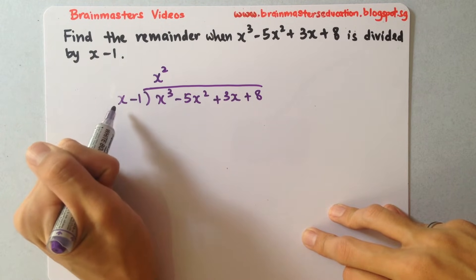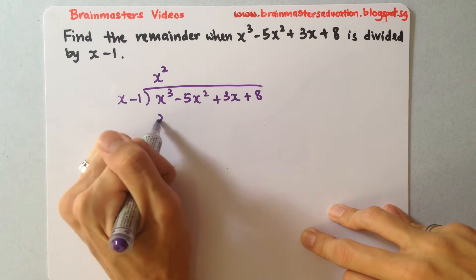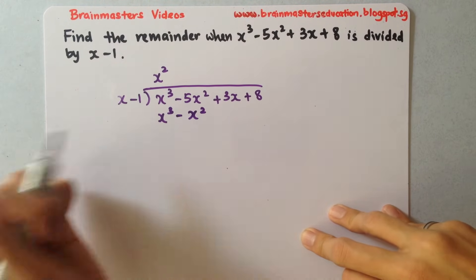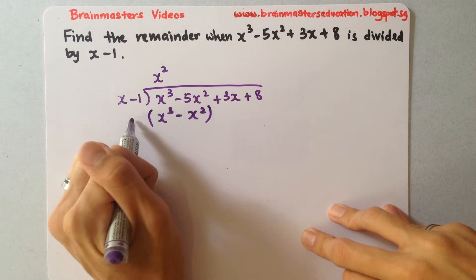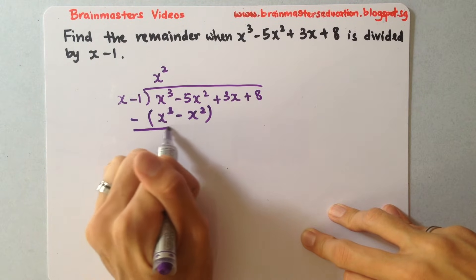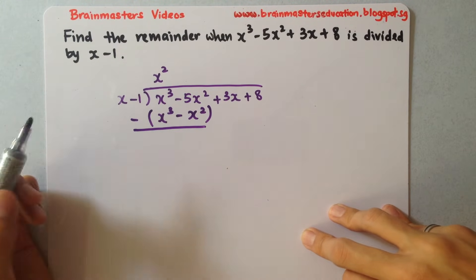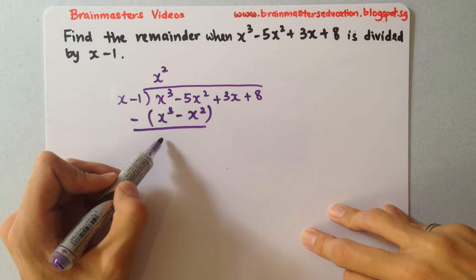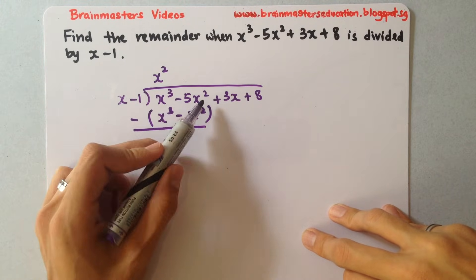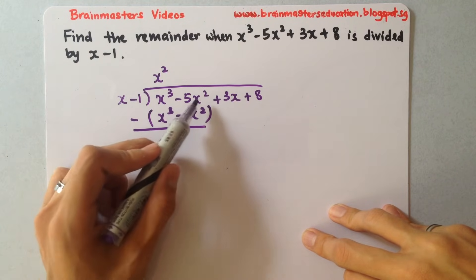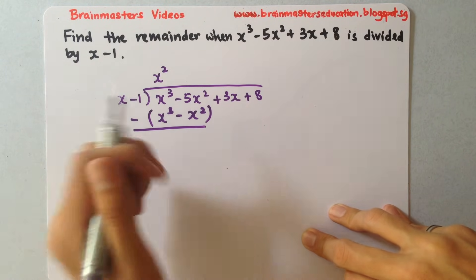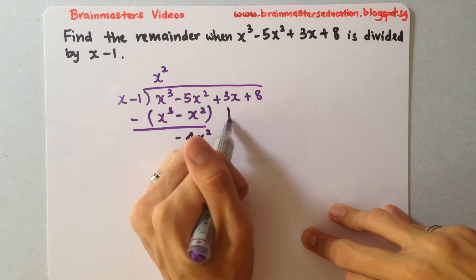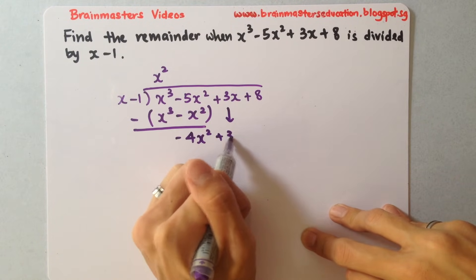So the x squared will multiply both the x and the minus 1, giving you x cubed minus x squared. Next, you bracket them and put a minus, considering the negative sign. So x cubed minus x cubed gives nothing. Then minus 5x squared plus x squared gives you negative 4x squared. Bring down the next term, which gives you plus 3x.